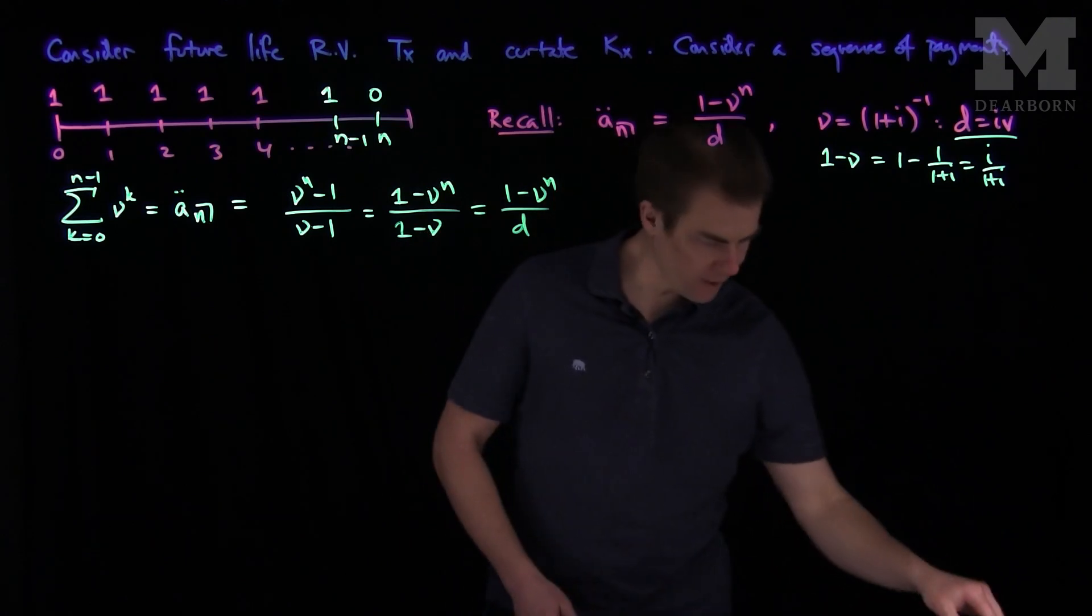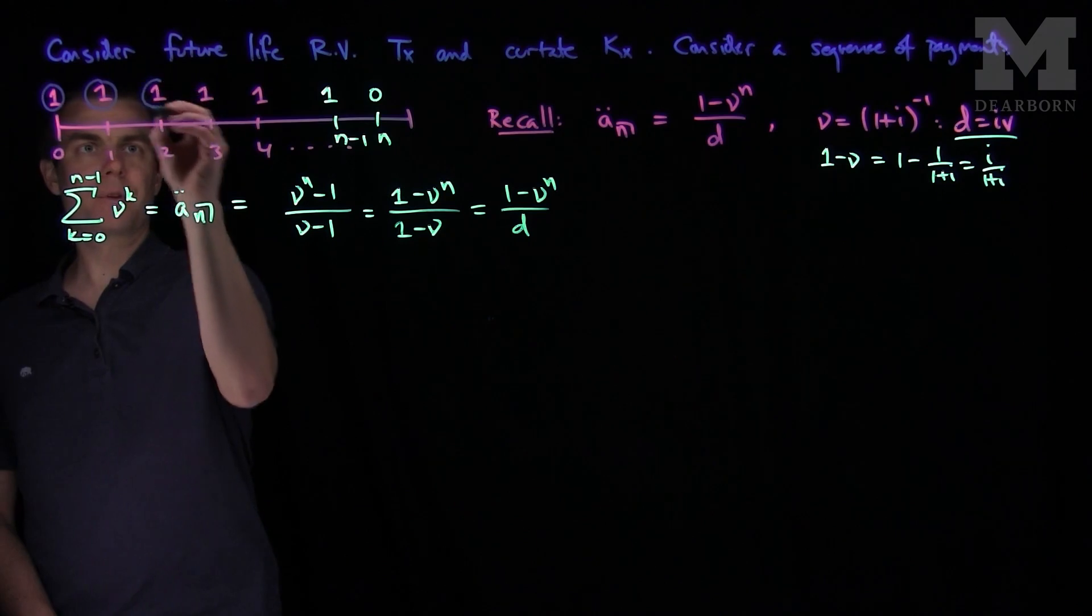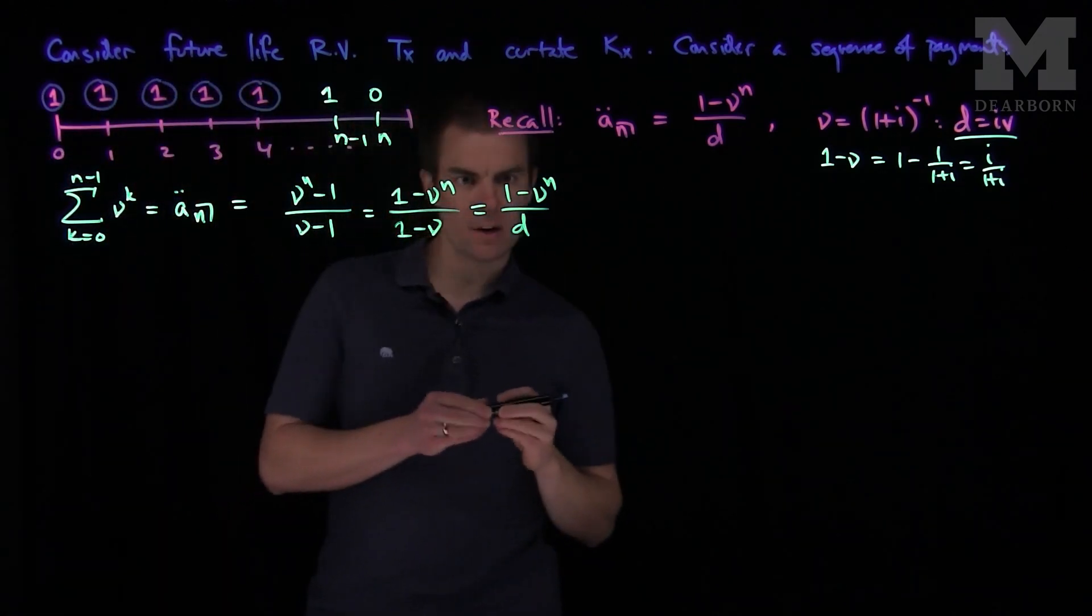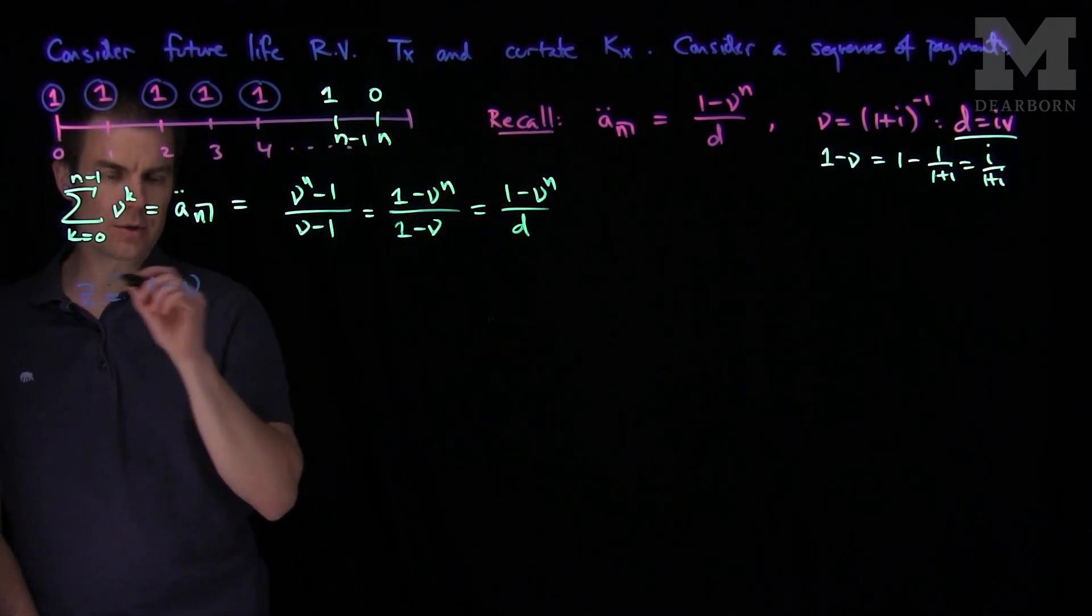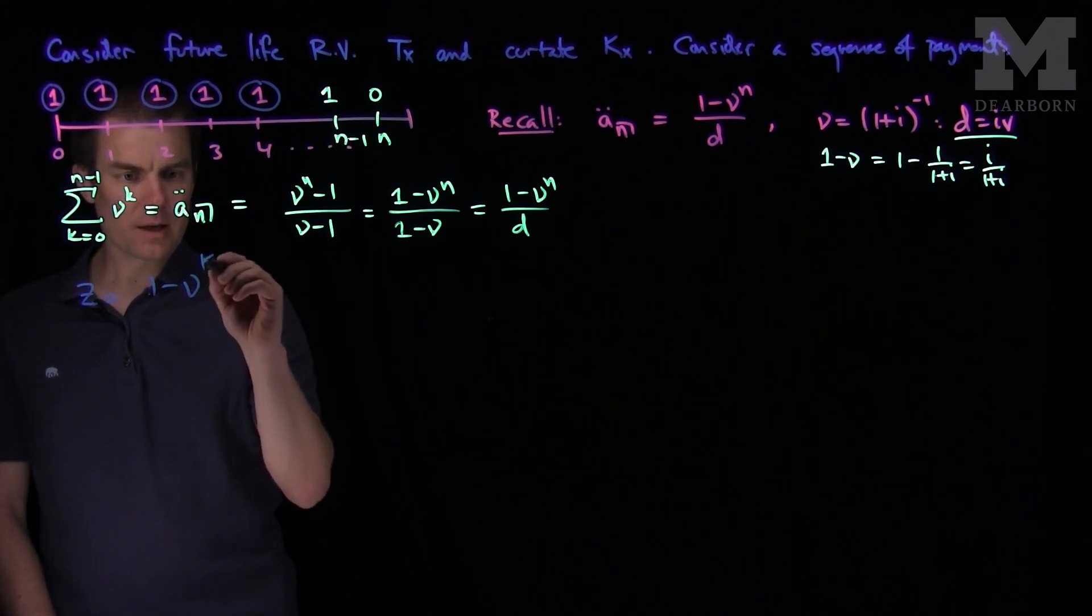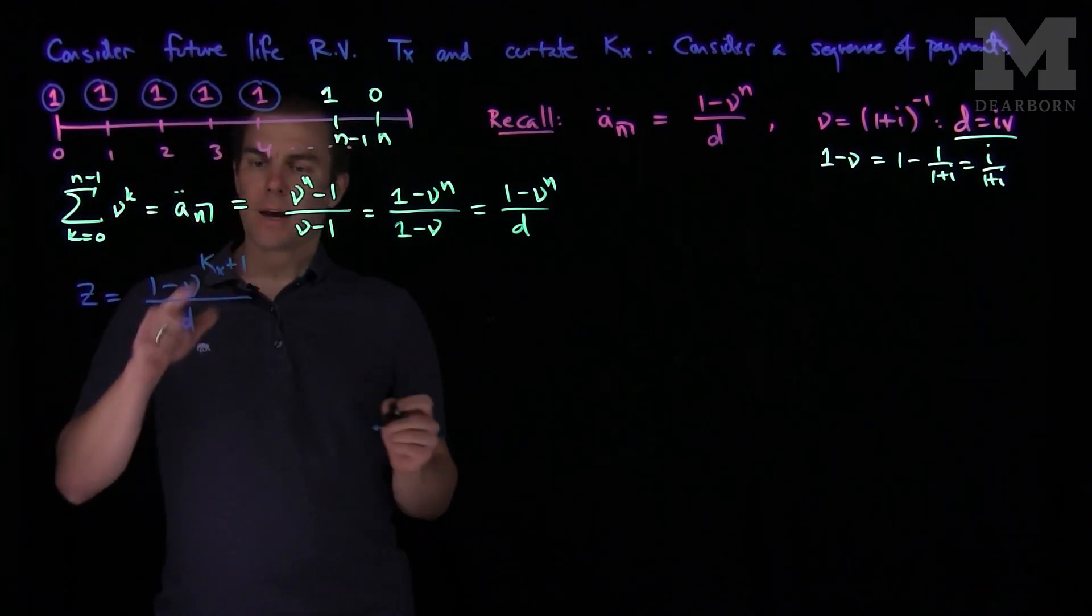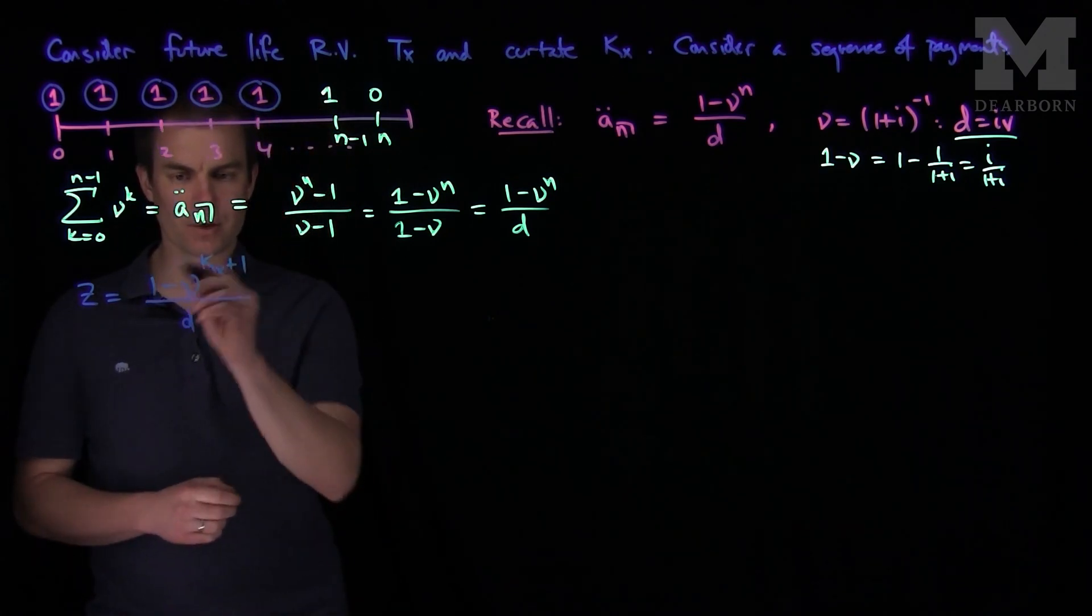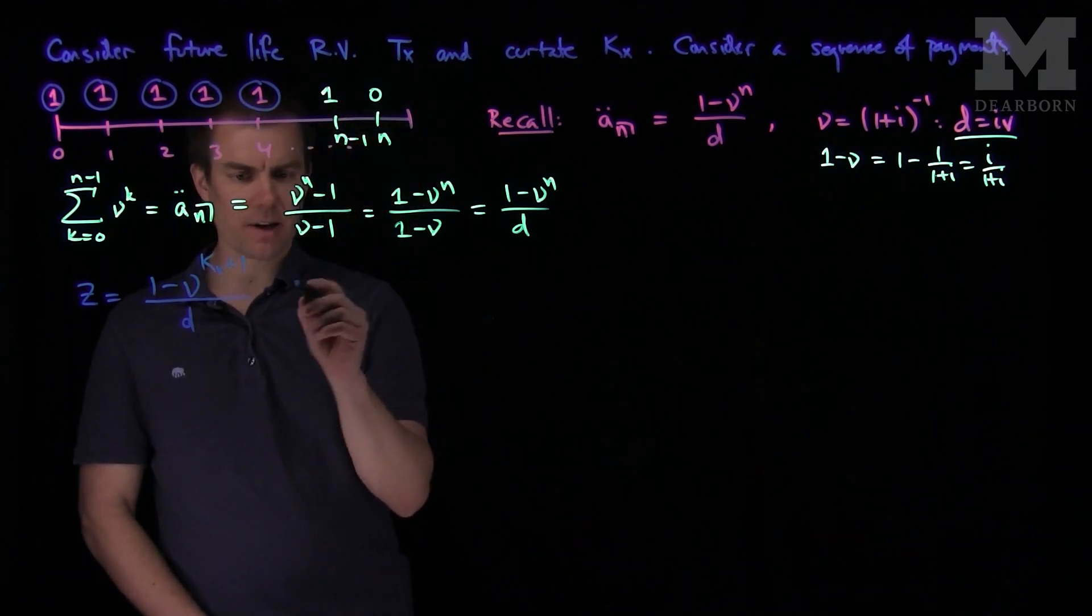Now we make this random in the following way. We say you will get $1 at the beginning of every year, provided you have survived up to this time. So now we have a random variable. So the random variable z will be 1 minus nu to the kx plus 1 over d. Because I'll get paid as long as I've survived up to that point. So that's our random variable, that's the kertate function. And now we can put the expected present value of this.